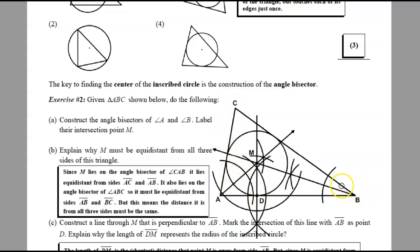But because it also lies on the angle B bisector, it would be equidistant from its rays too. So that's equidistant from both BA and BC. So it must be equidistant from all three sides of this triangle.